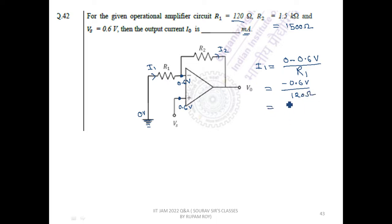By calculating this, this gives minus 5 milliampere. So i1 is minus 5 milliampere.